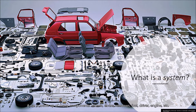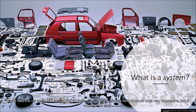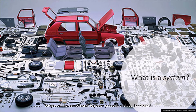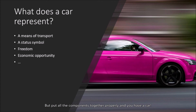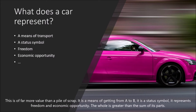A car is made up of many components — wheels, doors, windows, fuel, a driver, an engine, etc. If you take a car apart and spread out all these components on a big field, it would look very impressive, but it wouldn't be a car. Group them all together in a big pile and you have a big pile of parts — the sum of the parts — but it's still not a car and it's not very useful. But put all the components together properly and you have a car. This is of far more value than a pile of scrap. It's a means of getting from A to B. It can be a status symbol. For a student, it might represent freedom and economic opportunity. The whole is greater than the sum of all the parts.